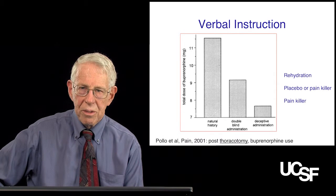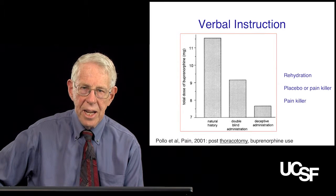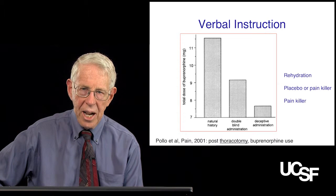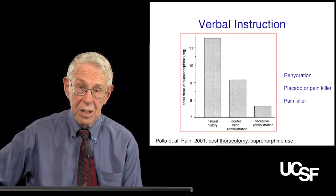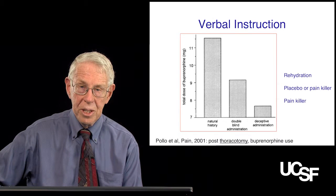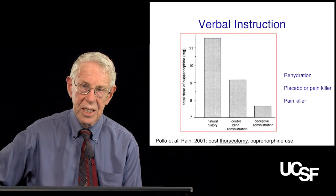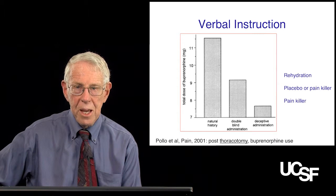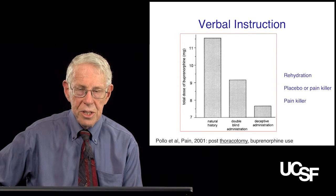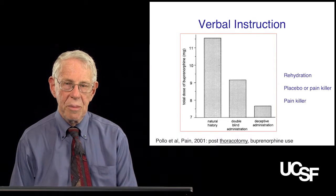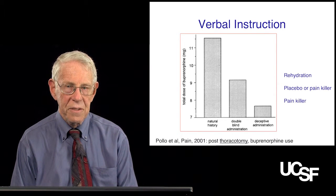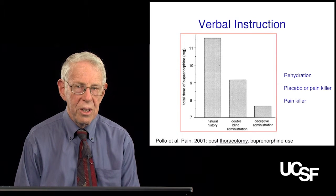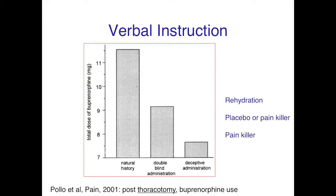I want to talk about the power of verbal instruction. This is a group of patients who had just had a thoracotomy — open chest surgery. The postoperative pain following a thoracotomy is quite severe and is usually treated with opioids. In this case, to study the effect of verbal instruction, patients received an infusion of saline. They were told three different things: they were told they were either getting rehydration, which is no pain medication.